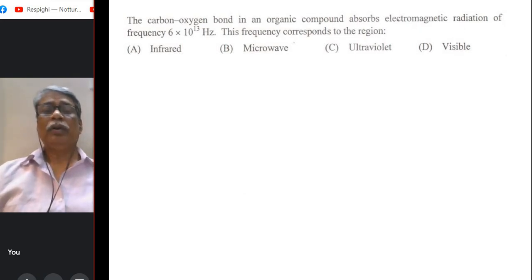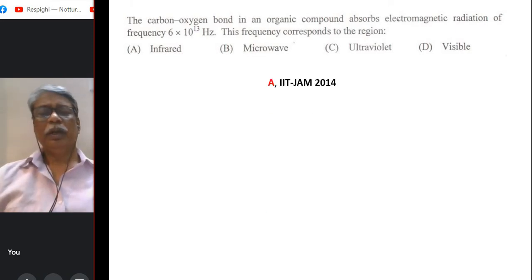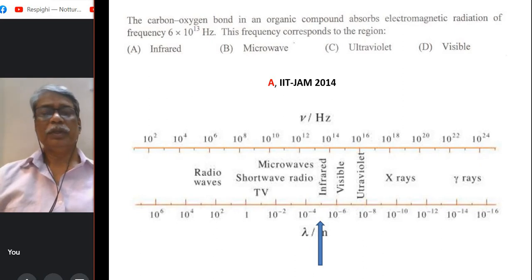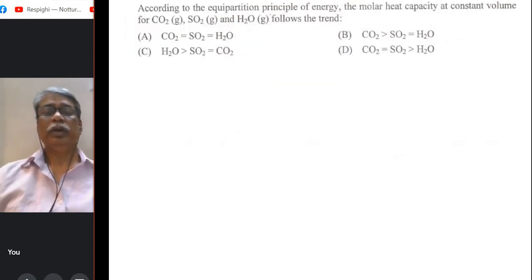The carbon oxygen bond in an organic compound absorbs EMR of frequency this. It belongs to what region of electromagnetic spectrum. This is a bit informative question and you have to know this information that infrared is 10 to the 12 to 10 to the 14, within that. So the given answer to this question is infrared region option A.